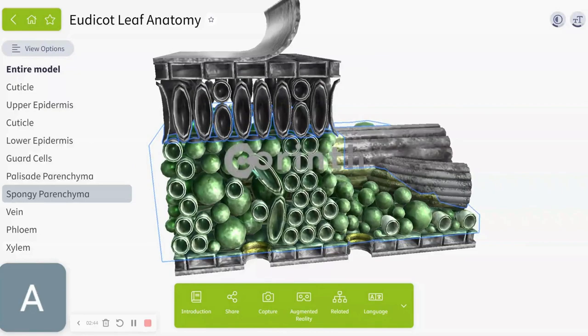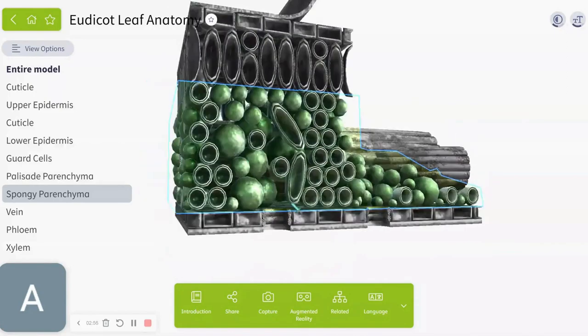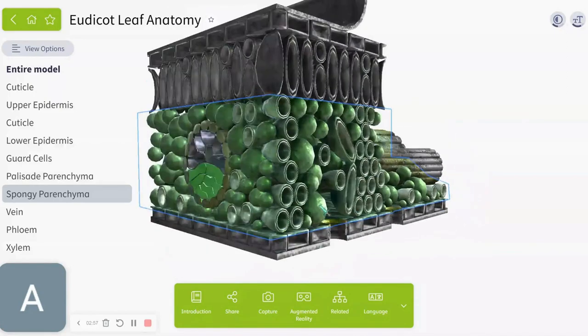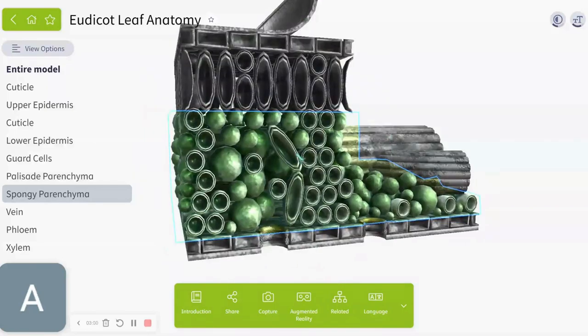The only reason it's called spongy mesophyll is because of the fact that it's spongy. It's got tons of holes in it. You can see right there, holes everywhere. And there's still some chloroplasts here. All plant cells have chloroplasts if it has a nucleus, in terms of plants.